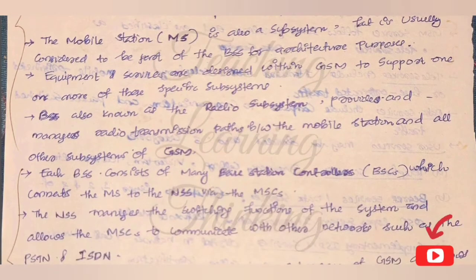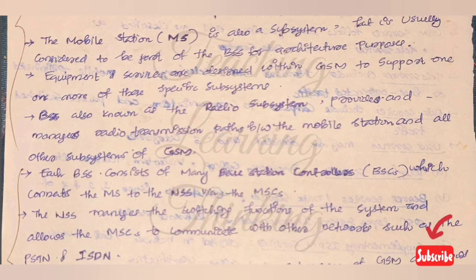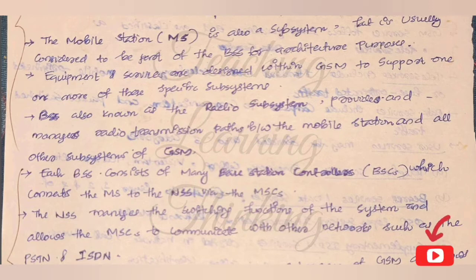Each BSS consists of many Base Station Controllers (BSC). The BSS connects the mobile station to the NSS via the MSC. MS is the mobile station and NSS is the Network Switching Subsystem.